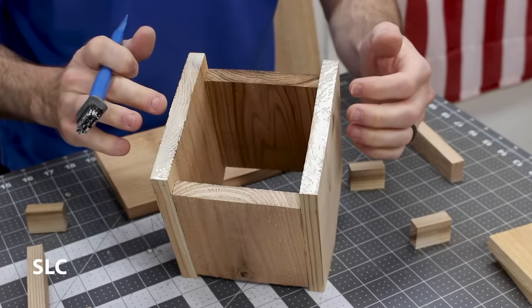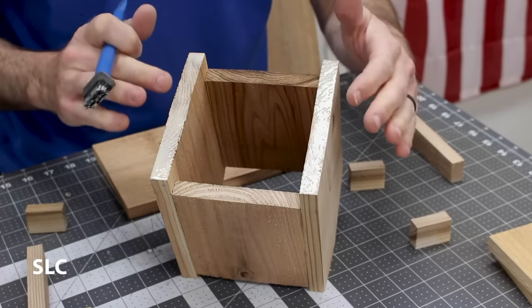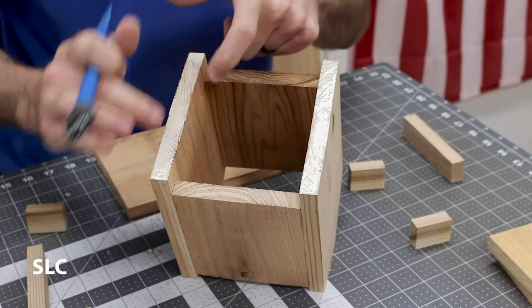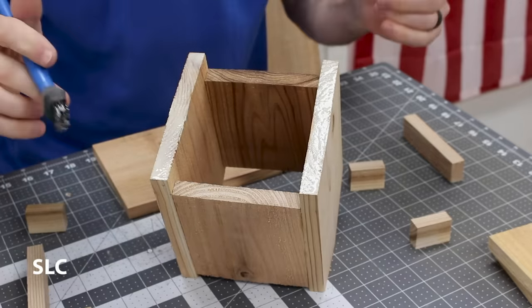Now since we're going to be gluing up end grain here, we need to put some glue, give it a few minutes because the end grain is going to soak in a lot of this glue. We'll add a second layer and then we can attach everything.